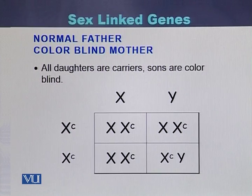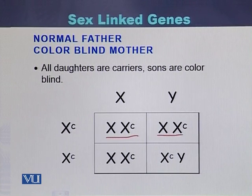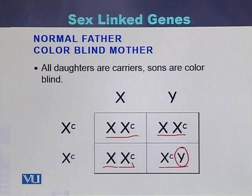If we perform a cross between a normal father and a color blind mother, all the daughters will be carriers, while all the sons will be color blind. Because there is no alternative X chromosome in case of the male — there is a Y chromosome and only one X — due to that one affected allele, all the sons will be color blind.